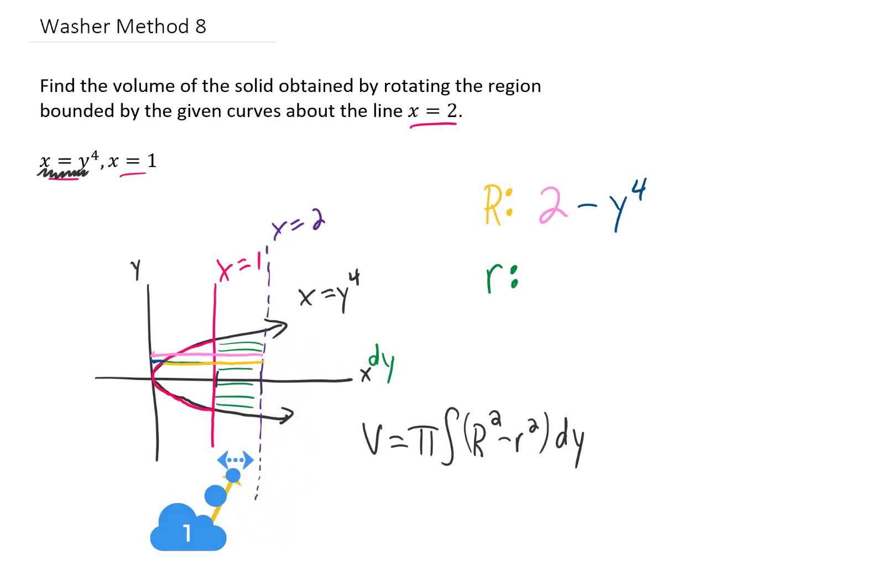In other words, 2 minus 1. So we can plug those two radii into our volume integral. We do need some limits of integration. You'll notice in this region, the smallest value of y is given by negative 1, and the largest value of y is given by positive 1.